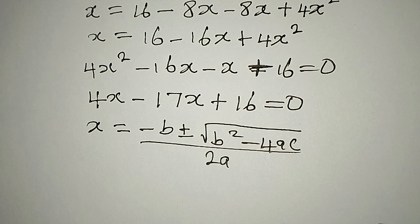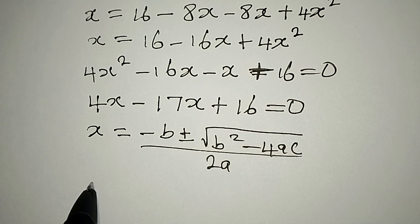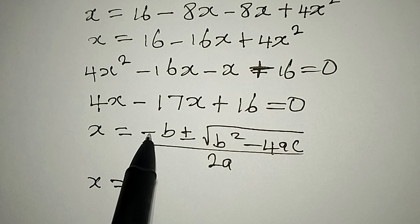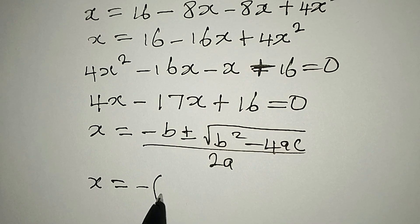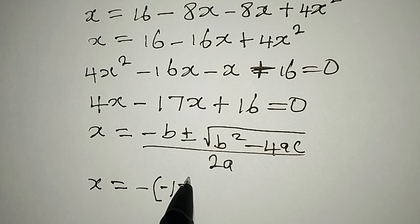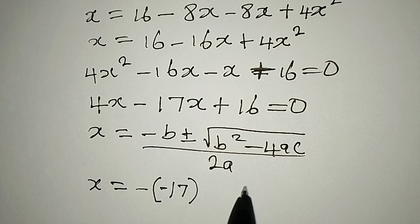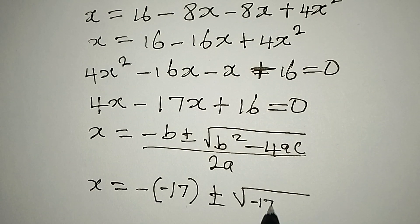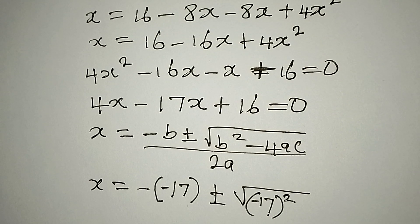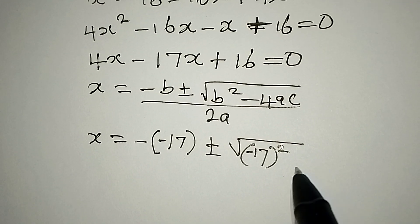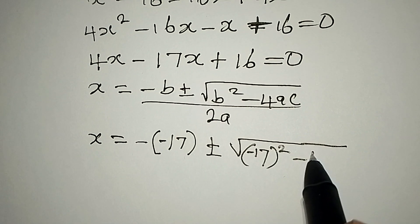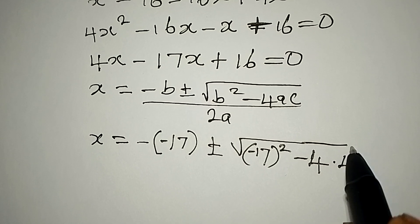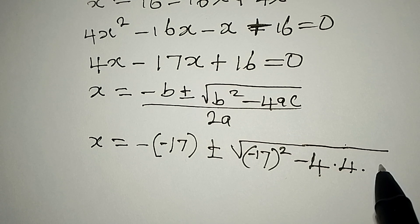This formula is called the quadratic general formula. So our x will be equal to negative b, this negative will be here, then b itself is negative 17, so you pick it out. Then plus or minus we have square root of negative 17 to the power of 2, you square that, minus 4 times a, a is 4, then multiply by c and c is 16.